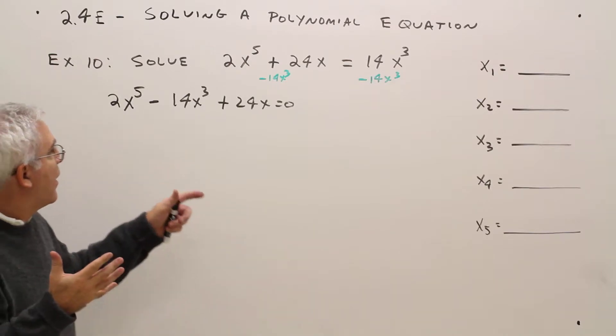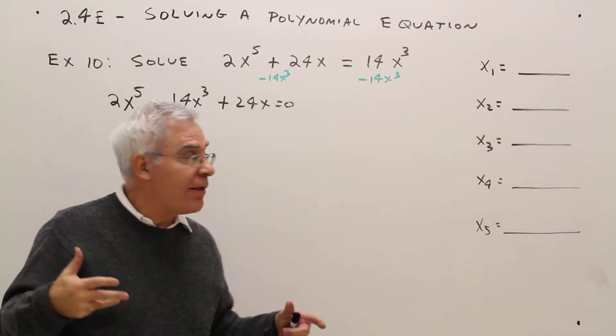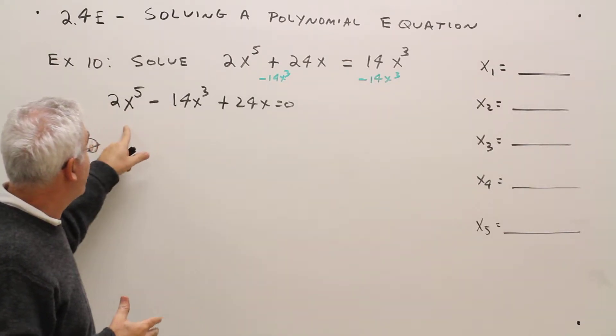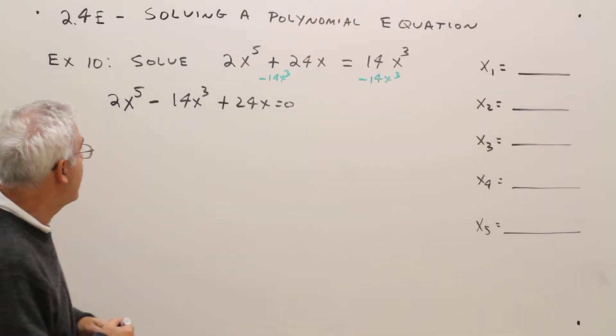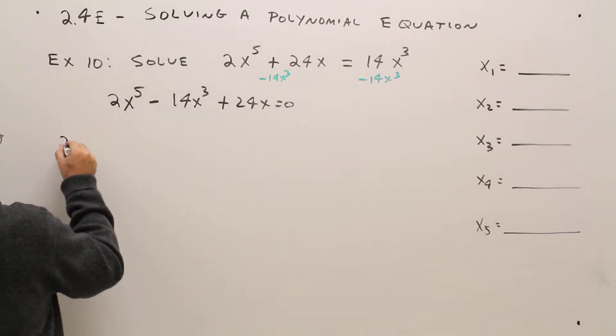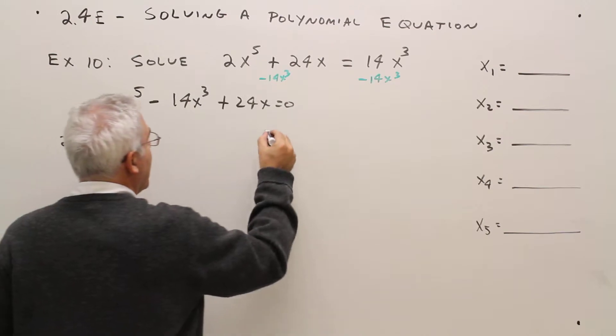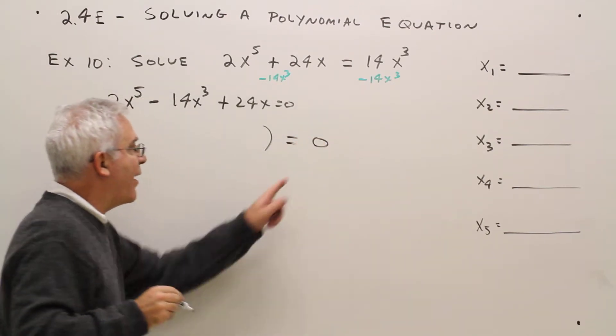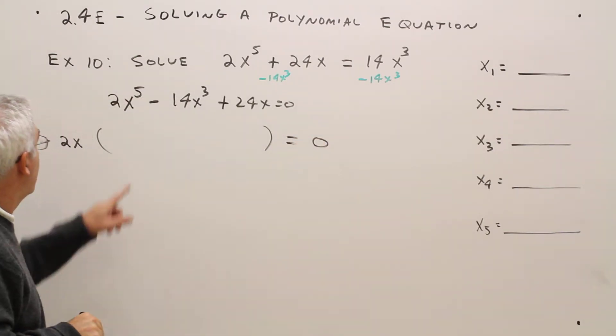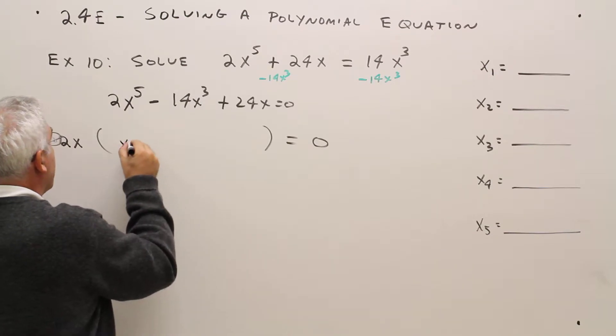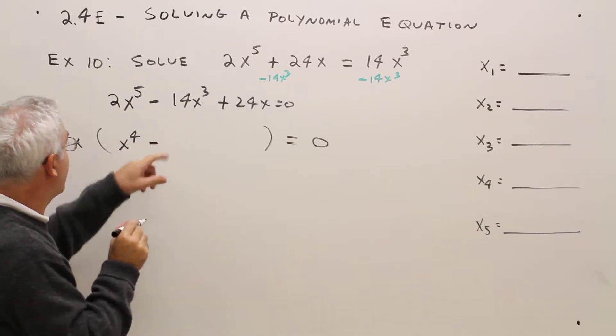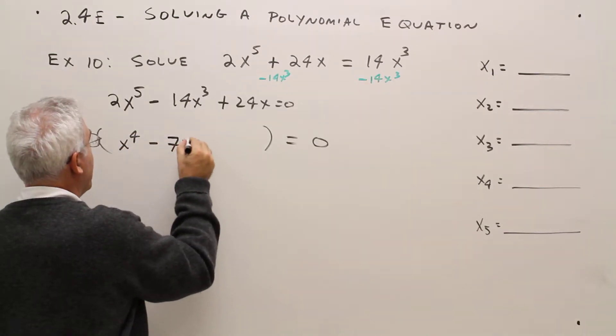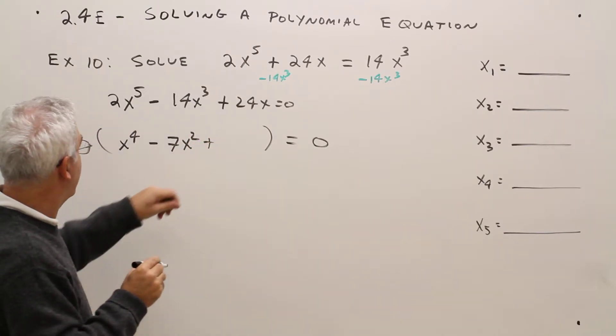Okay, then I want to factor. Let's first check for common monomials. Looks like a 2x. So I'll take a 2x out and let's see who survives. Again, it'll all be equal to zero.